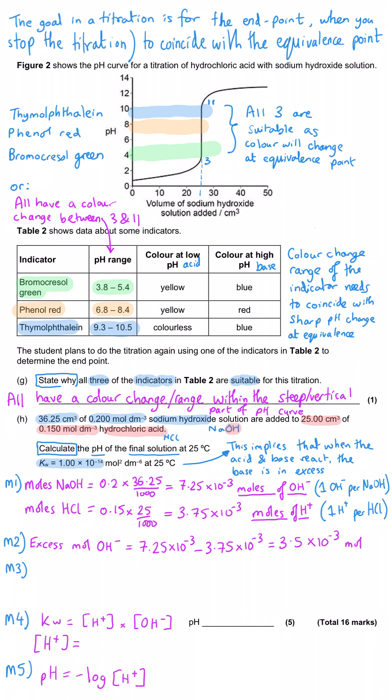Since we're using a base now, we know that the base is in excess, and that means we are using the Kw expression. Kw is H plus multiplied by OH minus, so H plus is equal to Kw divided by the hydroxide ion concentration. We know the moles of hydroxide, so we work out concentration by doing moles divided by volume. The volume is the sum of the two volumes of solution that have been added because that hydroxide ion will be spread out amongst this total volume, which is 61.25 cm cubed. That gets us a hydroxide ion concentration of 5.71 times 10 to the minus 2.